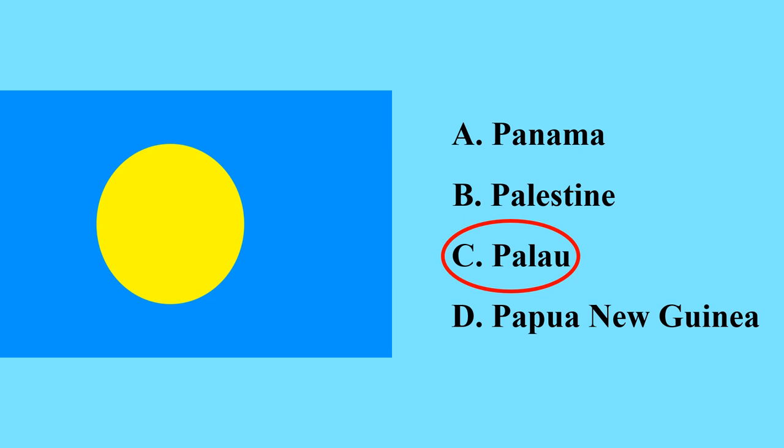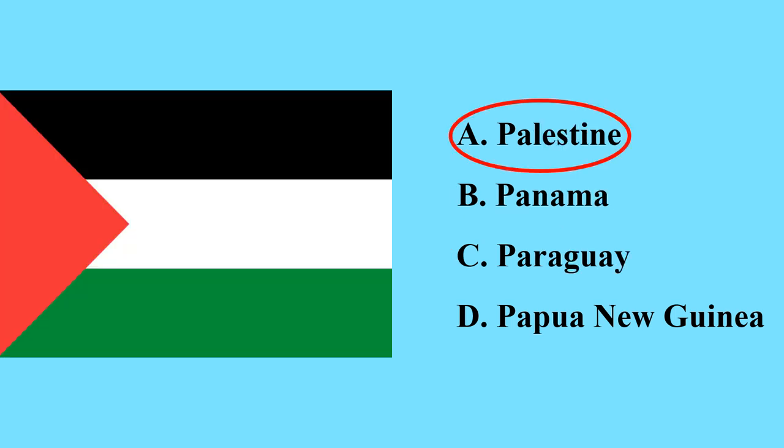This is the flag of Palau — it is a country in Oceania. This is the flag of Palestine — Palestine is not a UN member country; it is actually a state with limited but substantial international recognition. It has two regions in the Middle East: the Gaza region and the West Bank.